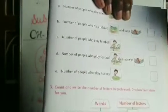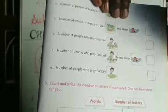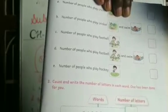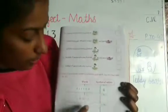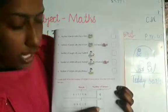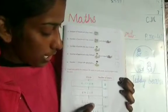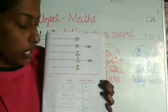The next exercise: count and write the number of letters in each word. One has been done for you. Kitten has six letters: K, I, T, T, E, N. You have to count the letters in uncle, ocean, and basketball — B, A, S, K, E, T, B, A, double L — and write how many letters each word has.